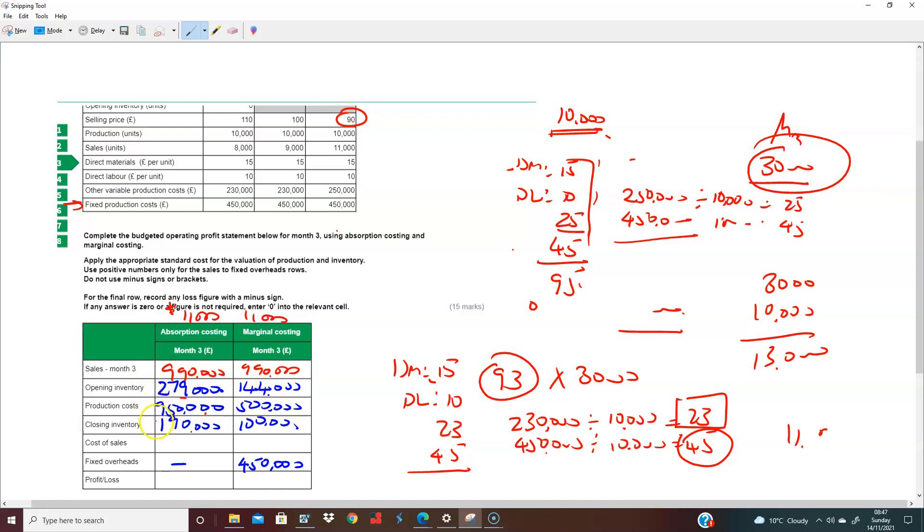So what do we have? Opening inventory plus production minus closing inventory gives us our cost of sale. So 279,000 plus 950,000 minus 190,000. I have cost of sale here of 1,039,000. So it looks like I have a loss. I'm doing this without checking the answers. So I have a loss of 49,000.